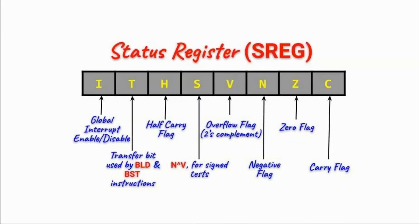The status register inside the ATmega microcontroller is shown here. Conditional branch instructions are executed based on the status of flag bits within this register. The carry flag is set whenever we have a carry out from a byte addition. The zero flag is set when we have zero resulting from an arithmetic or logic operation.